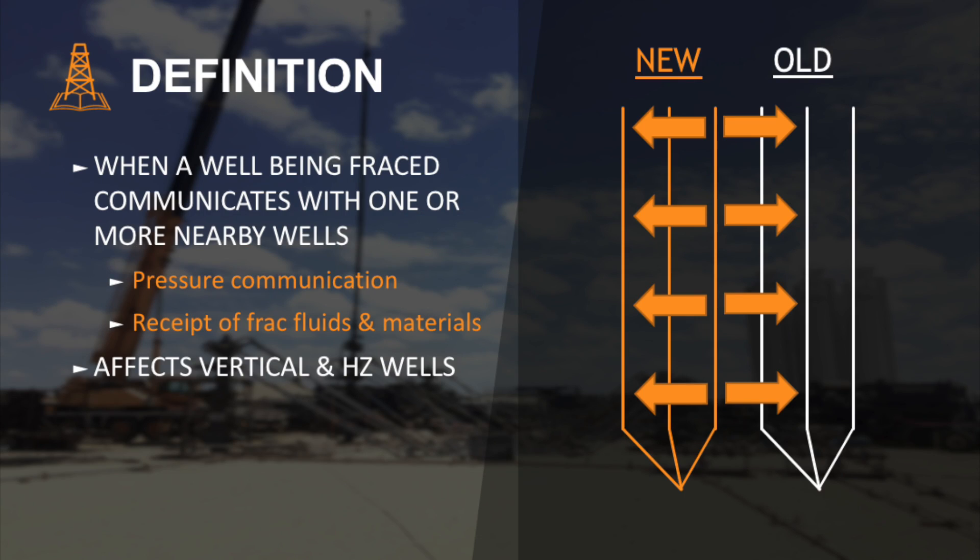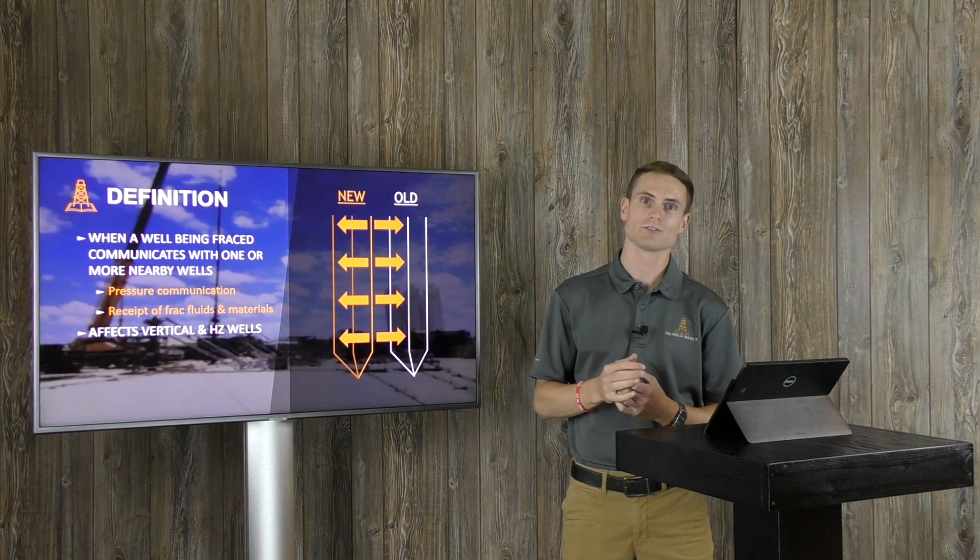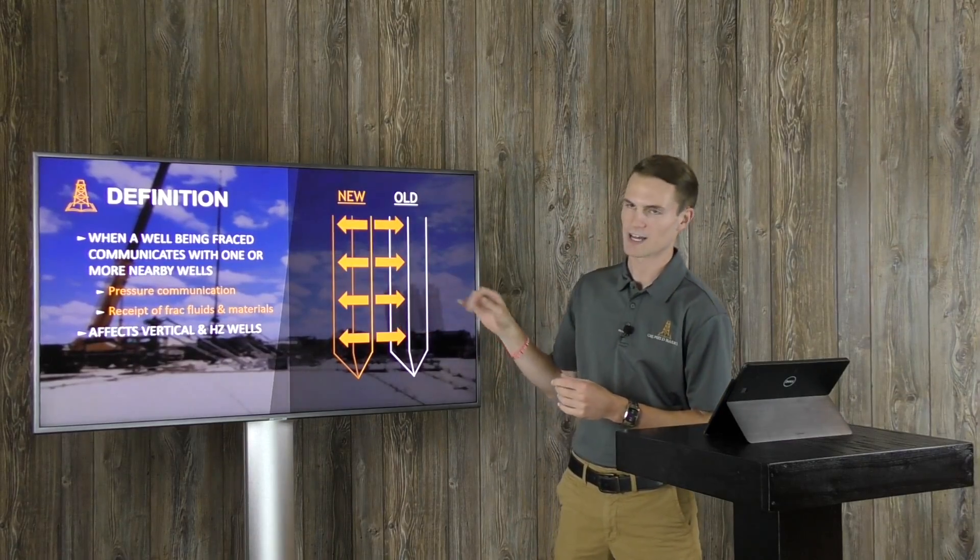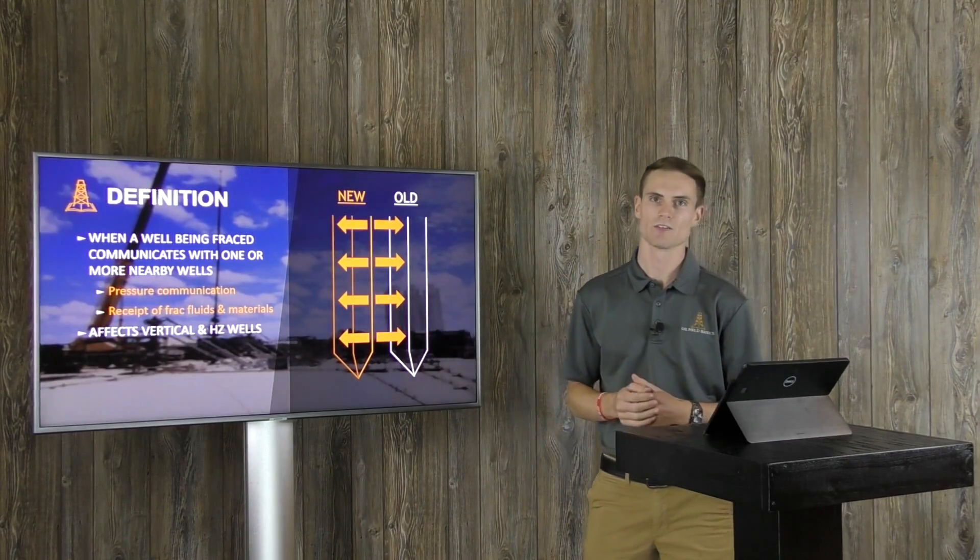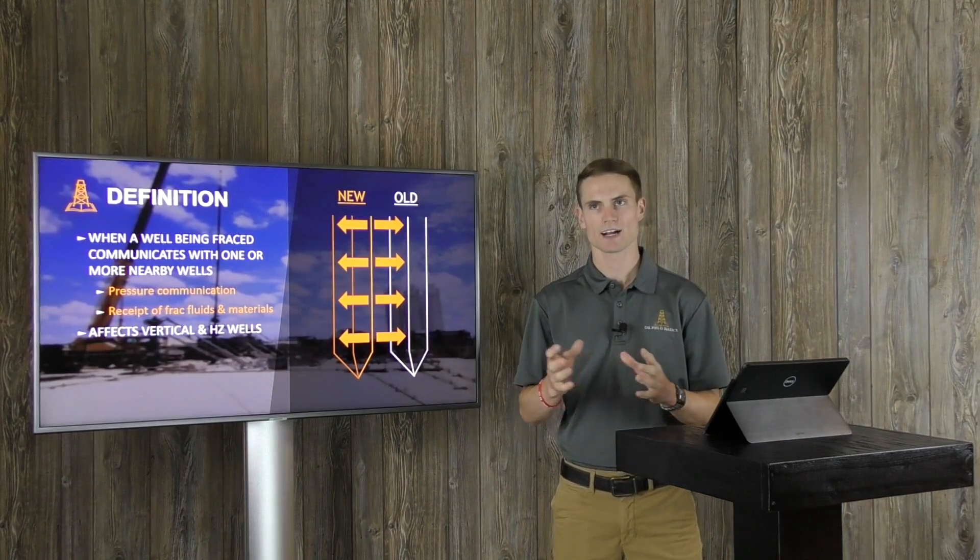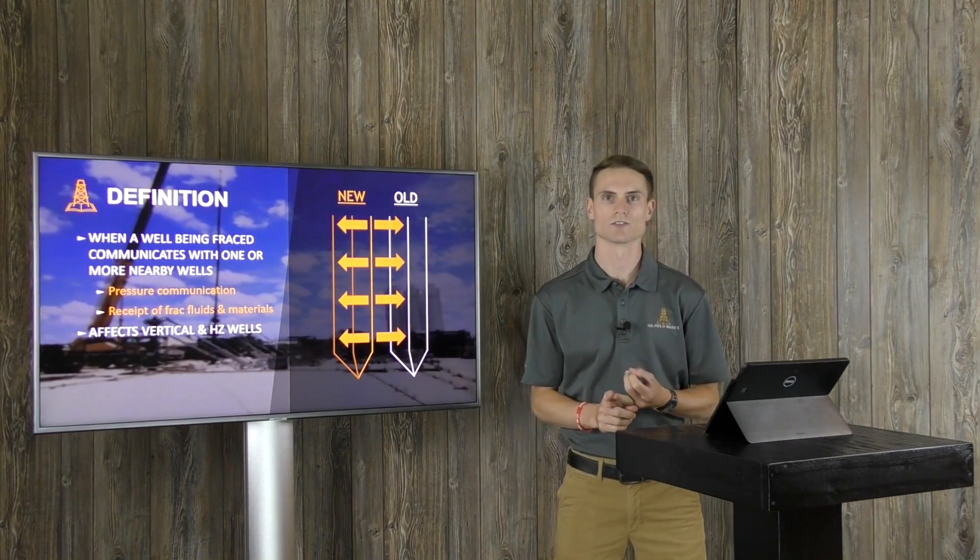So frac hit can range in intensity from just near pressure communication, you can see a little bit of a pressure spike in the offset laterals, or clear to sand issues where you're getting literally sand in other laterals nearby and you can pack off that lateral. We're going to talk about all this and more. But it's important to note that it can also impact not only horizontal, but vertical wells as well.